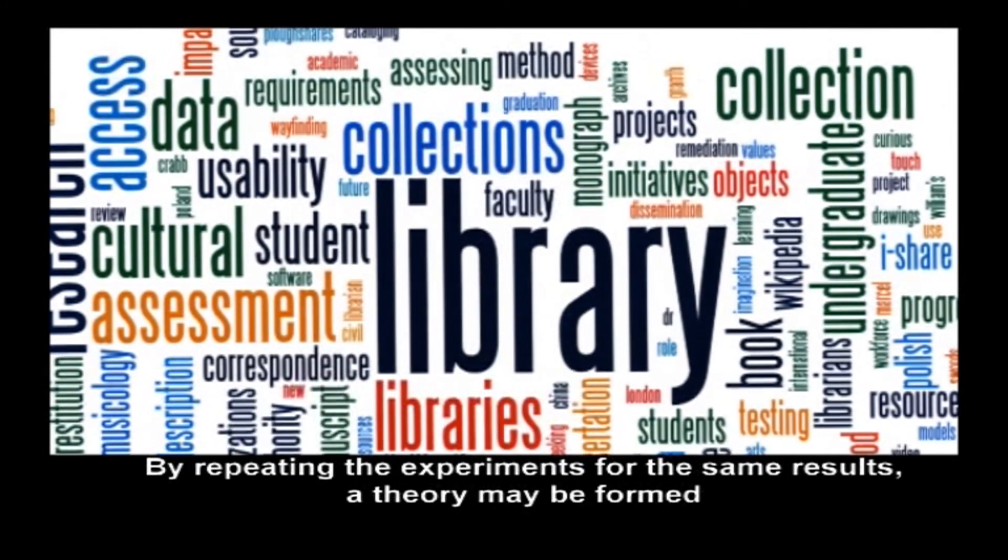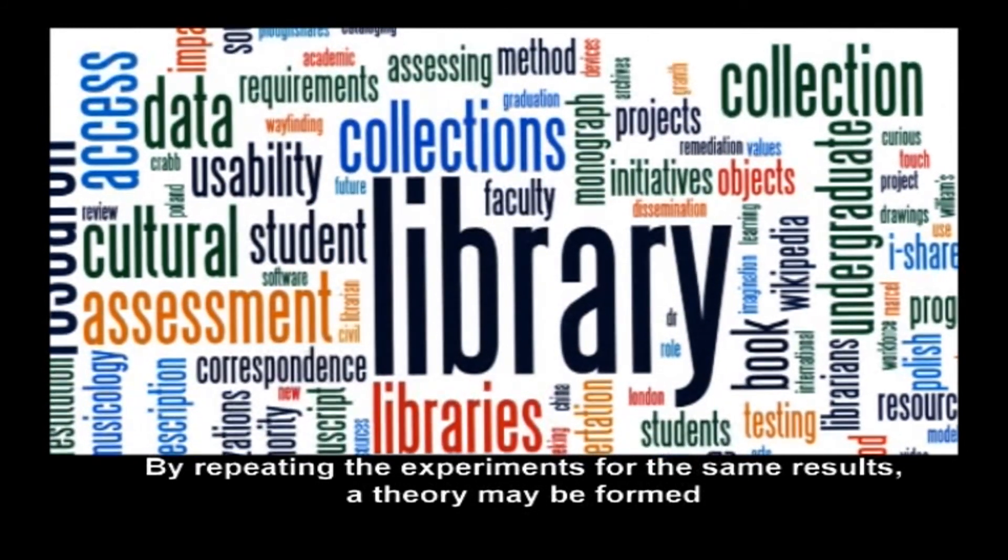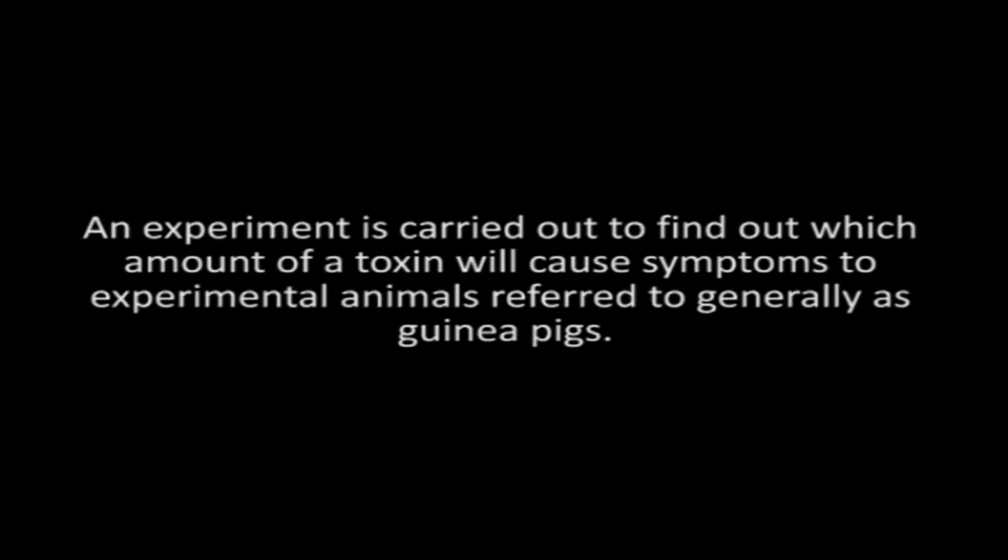When experiments have already been done getting the same results, a theory may be formed which is then conveyed through publication of findings. For example, an experiment is carried out to find out which amount of a toxin will cause symptoms to experimental animals, referred to generally as guinea pigs. Experimentation need not be done only in laboratories.